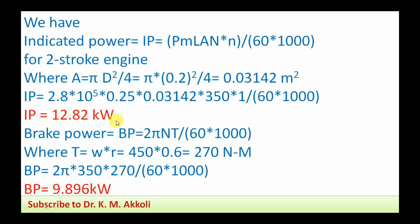Brake power BP = (2π N T) / (60 × 1000), where T is torque on the brake drum. Torque T = W × R = 450 × 0.6 = 270 N·m. Therefore BP = (2π × 350 × 270) / (60 × 1000) = 9.896 kW.